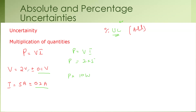How do we work out the percentage uncertainty? To find the percentage uncertainty in the voltage, that is the uncertainty in the voltage divided by the value recorded, multiplied by 100. The value recorded is 2, so 0.1 divided by 2, multiplied by 100.